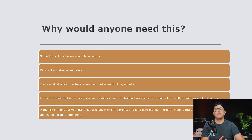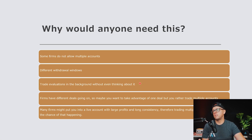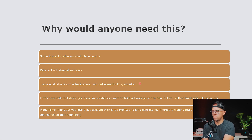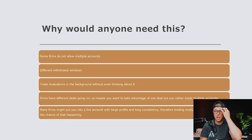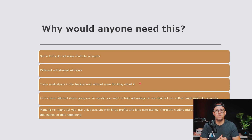You could also trade different evaluations in the background without even thinking about it. A lot of firms have different deals you might want to take advantage of. Instead of rushing the evaluation — because a lot of times when you rush the evaluation, you actually fail — I call it 'YOLO the evaluation' because you only trade once and one trade you either fail or you pass. A lot of people do that, especially once they're funded with other accounts. Having it running in the background linked to your main account, it will slowly start growing. Over the course of a month, you'll pass it and just go from there.